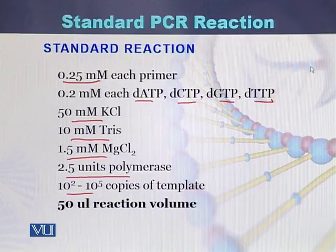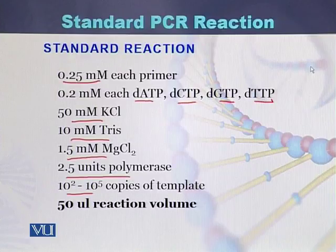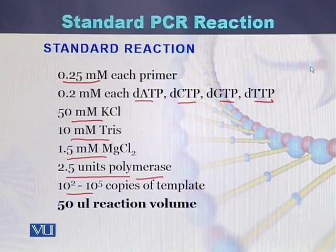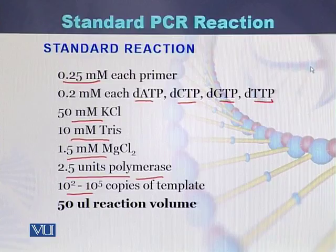The volume of the PCR reaction can be 50 microlitre, but this is a standard reaction — there can be variation in each of these ingredients. Sometimes we have to increase the amount of the DNA polymerase or the magnesium chloride. Before optimization of conditions, we may have to change or vary the amounts given here, depending on the primers and the buffer.